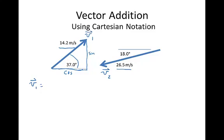So this will be the cosine and this will be the sine because we're opposite this angle, adjacent to this angle here for the cosine. So here for V1 we'd have 14.2 meters per second times the cosine of 37.0 degrees.